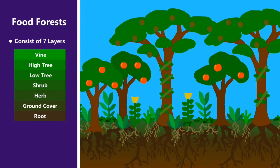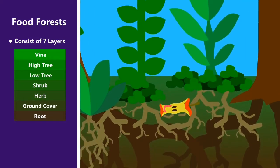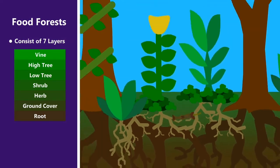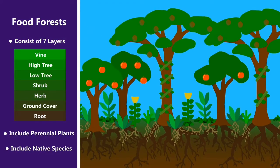Every one of these layers either produces some sort of food or medicine, or is in some way helpful to the system as a whole. The plants are mostly perennials and include as many native species as possible.